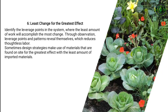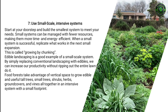Principle seven: Use small-scale intensive systems. Start at your doorstep and build the smallest system to meet your needs. Small systems can be managed with fewer resources, making them more time and energy efficient. When a small system is successful, replicate what works in the next small expansion — this is called growing by chunking. Edible landscaping is a good example: by replacing conventional landscaping with edibles, you can increase productivity without ripping out the entire lawn. Food forests take advantage of vertical space to grow edible and useful tall trees, small trees, shrubs, herbs, ground covers, and vines together in an intensive system with a small footprint.